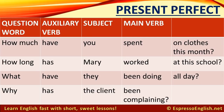Let's look at the present perfect. The auxiliary verb is 'have' or 'has,' and the main verb is the past participle form. For example: How much have you spent on clothes this month? How long has Mary worked at this school? This also works for the present perfect continuous, as in: What have they been doing all day? Why has the client been complaining?